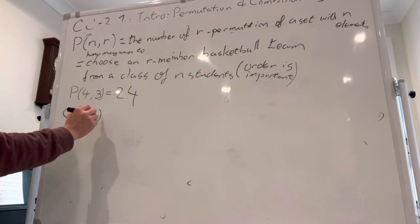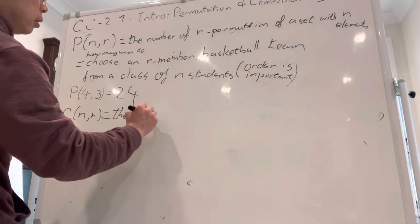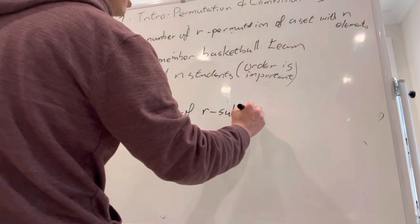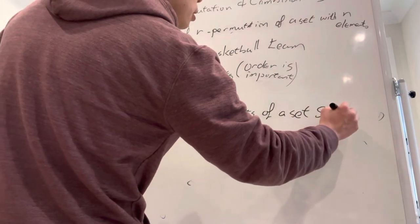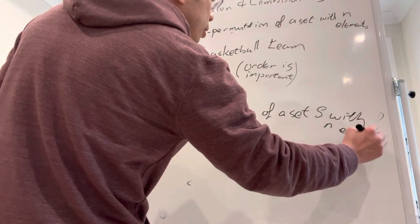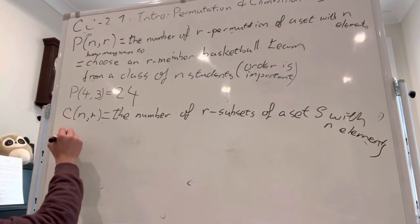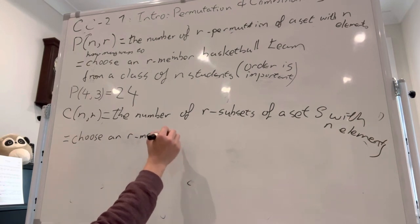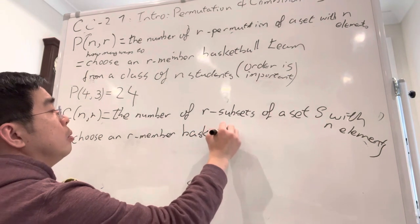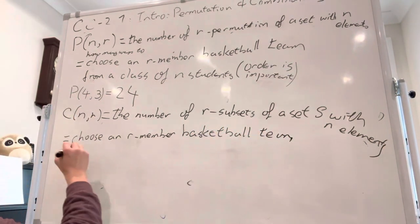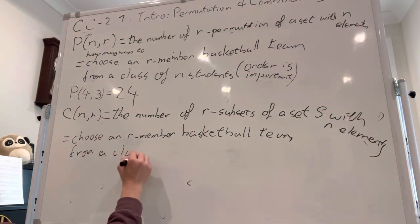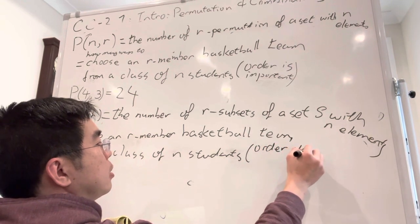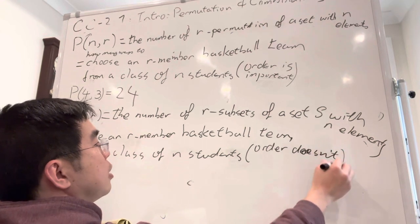So another one is called C(n,r). As you can guess, this is basically the number of r-combinations or the r-subsets of a set S with n elements or items. Going back to our basketball team terminology, this is choose an r-member basketball team from a class of n students. Now in this case, order does not matter, meaning we are not making any captain, etc. It's just who is in the team.